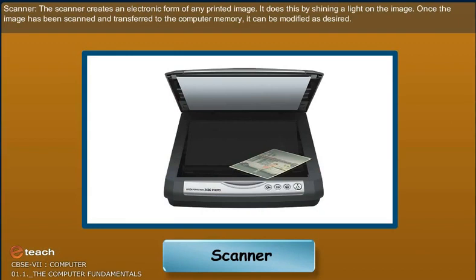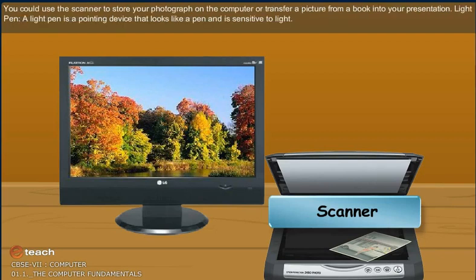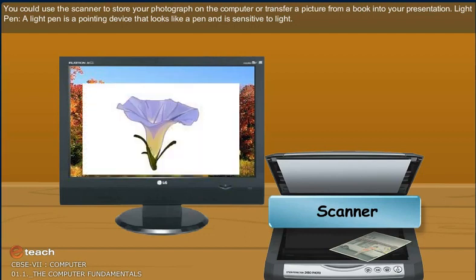Scanner: The scanner creates an electronic form of any printed image. It does this by shining a light on the image. Once the image has been scanned and transferred to the computer memory, it can be modified as desired. You could use the scanner to store your photograph on the computer or transfer a picture from a book into your presentation.